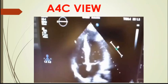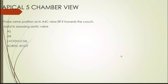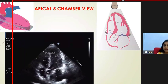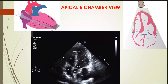The next view — from the apical four-chamber position, we should just tilt the probe towards the couch to get the apical five-chamber view. All the structures in the apical four-chamber view can be seen here. Apart from this, the fifth structure we are able to see is the aorta and the aortic valve. The aorta is the fifth structure, so this is called the apical five-chamber view.